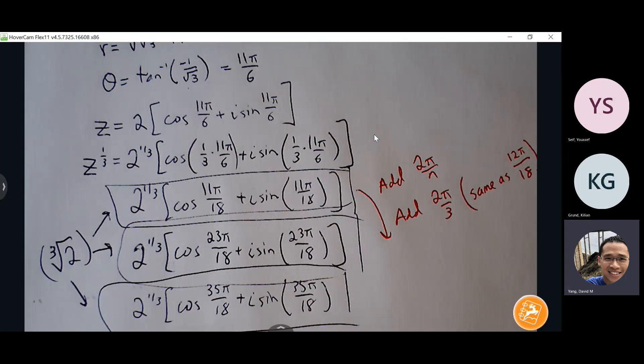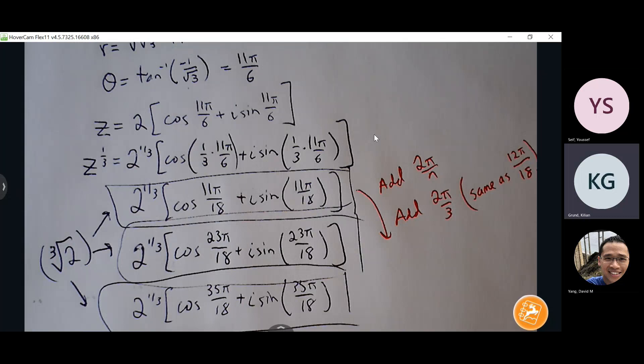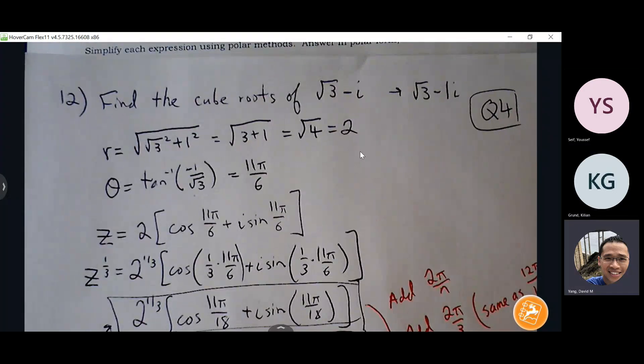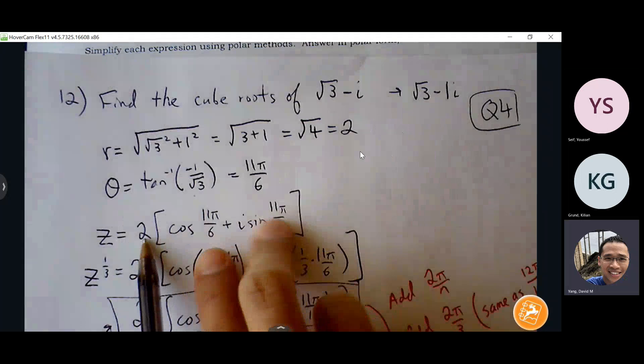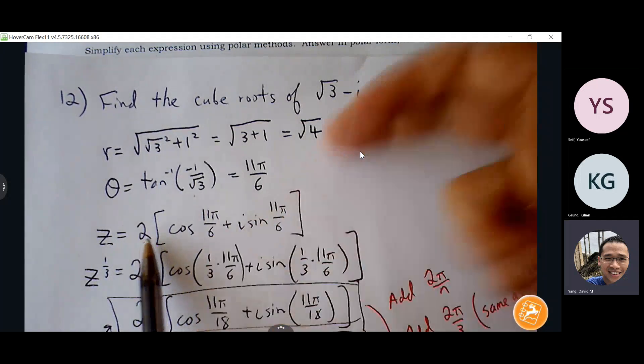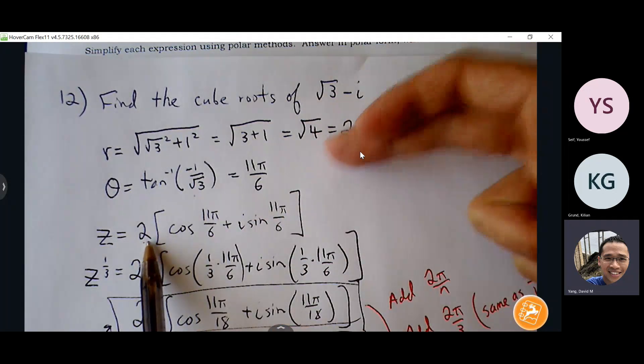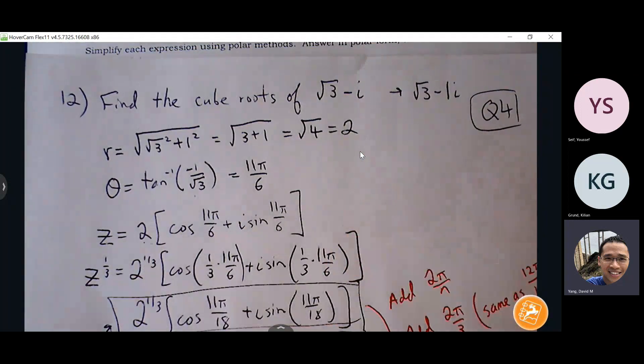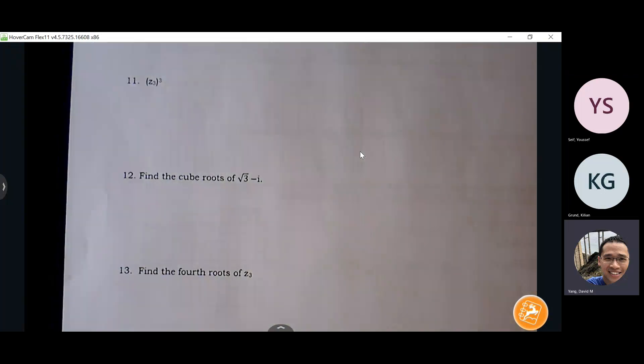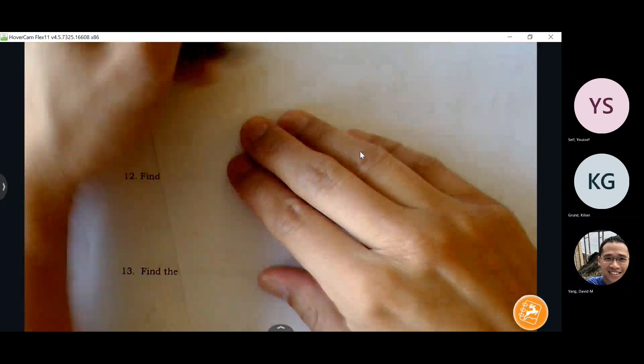Okay, any questions? No, alright, thank you. Now, 13 is also finding the roots, but it's a little bit easier because it already gives it to you in terms of R and theta, so it saves a bit of steps because you don't have to find R and theta, it already gives it to you. So if you look at 13 here, 13 says find the fourth root of Z3.